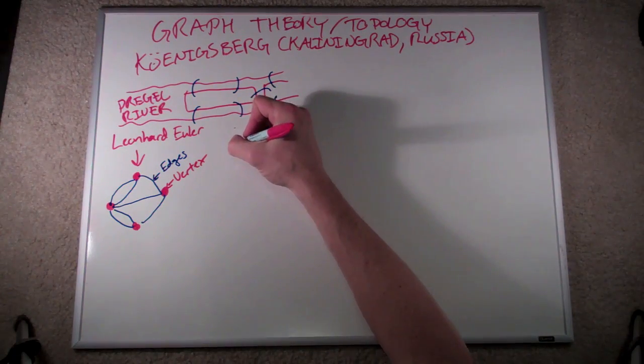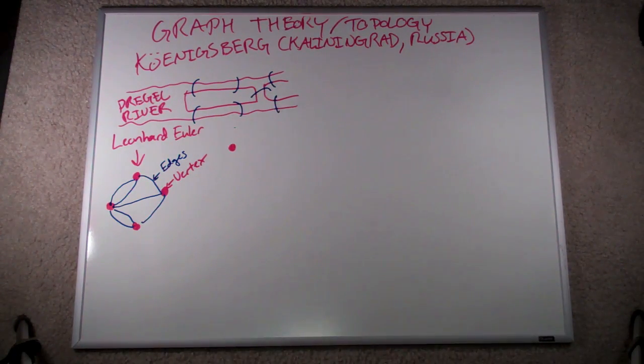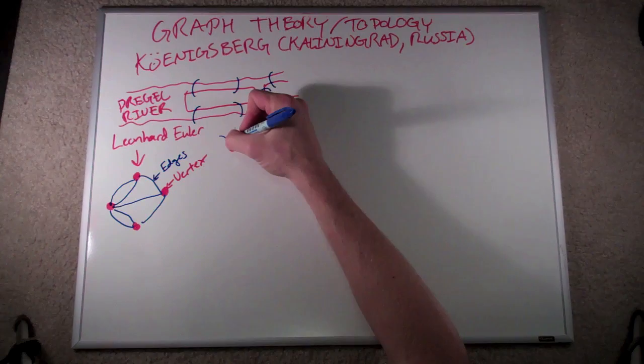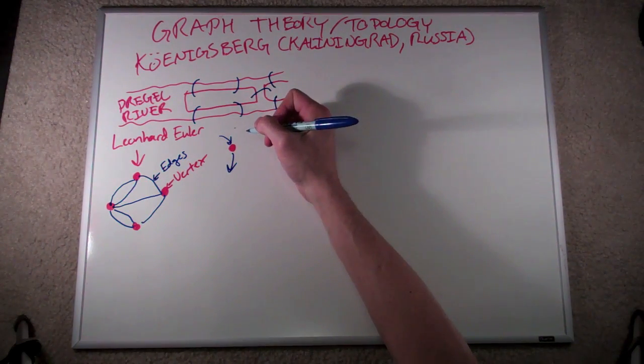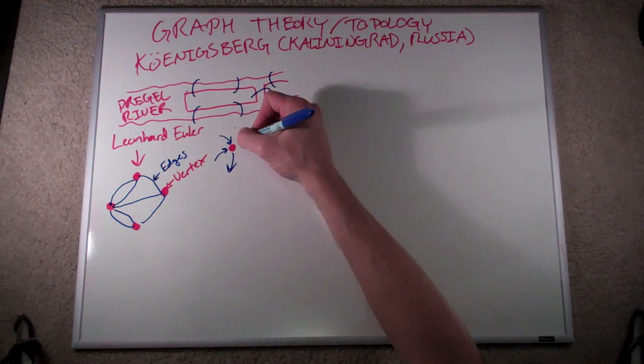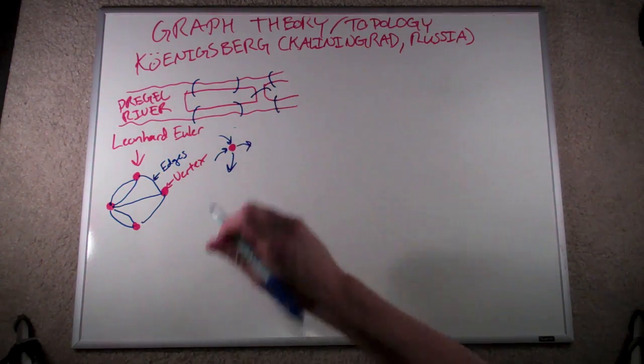Namely, if you have a vertex and you have an edge that carries you to that vertex, you are stuck unless you have another edge that takes you back out. He began counting the number of edges that connected to each vertex and referred to this number as a degree.